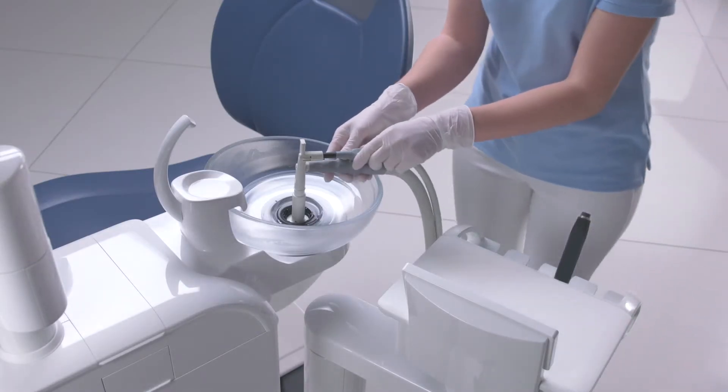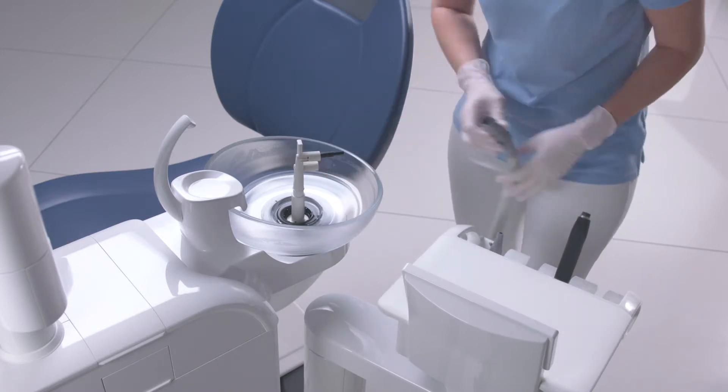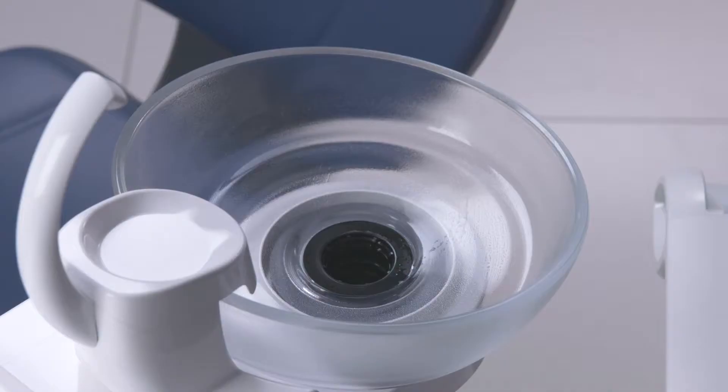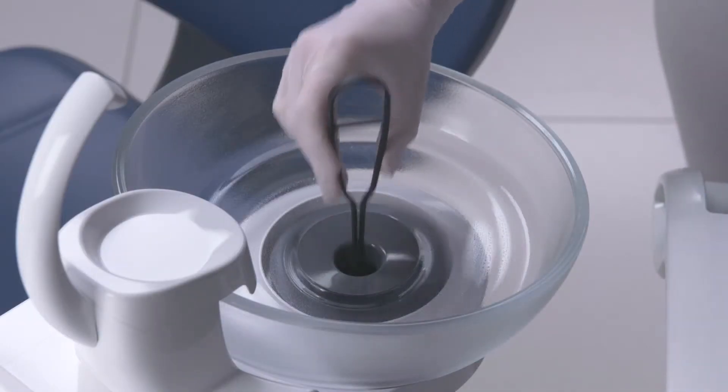After finishing the suction process, pull off the hoses and place them back in their position. Remove the cleaning adapter and reinsert the gold trap.